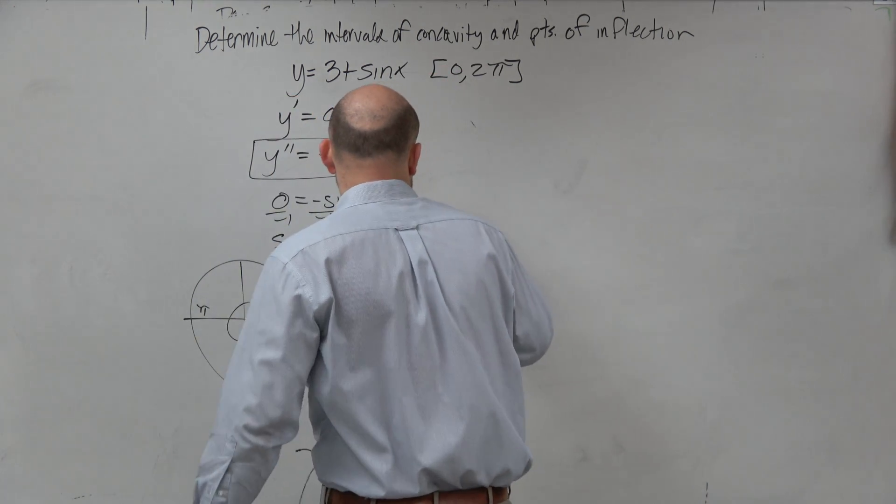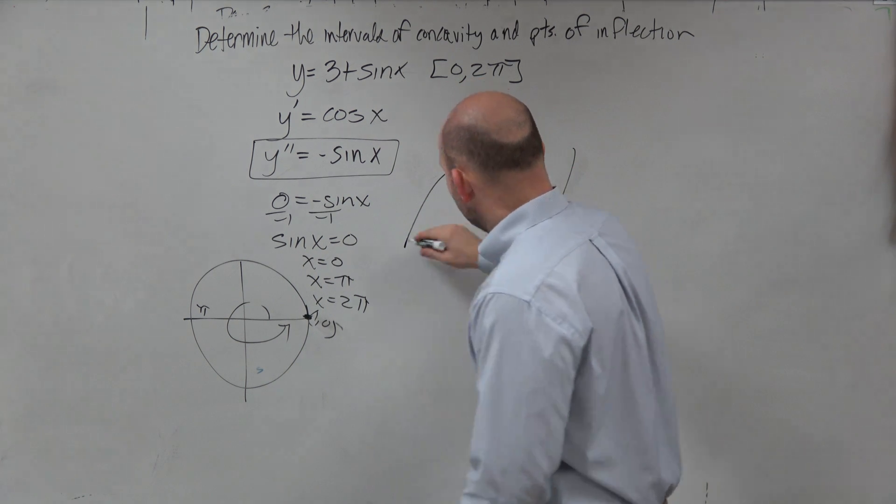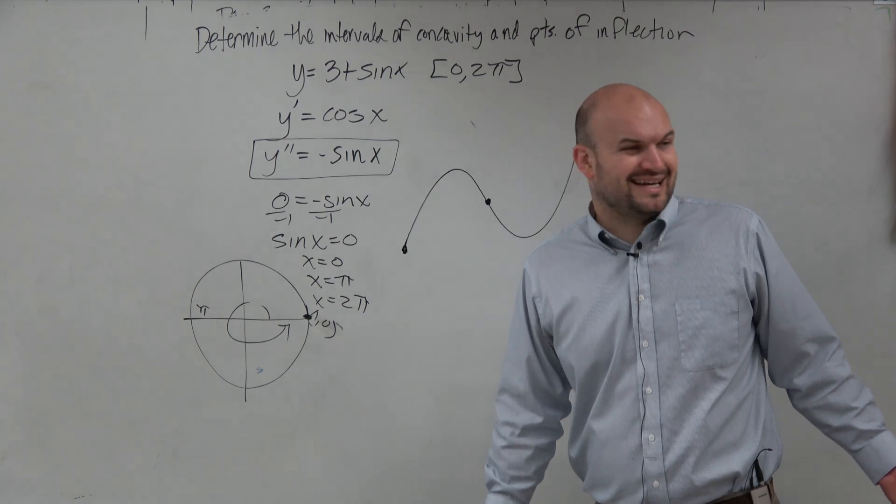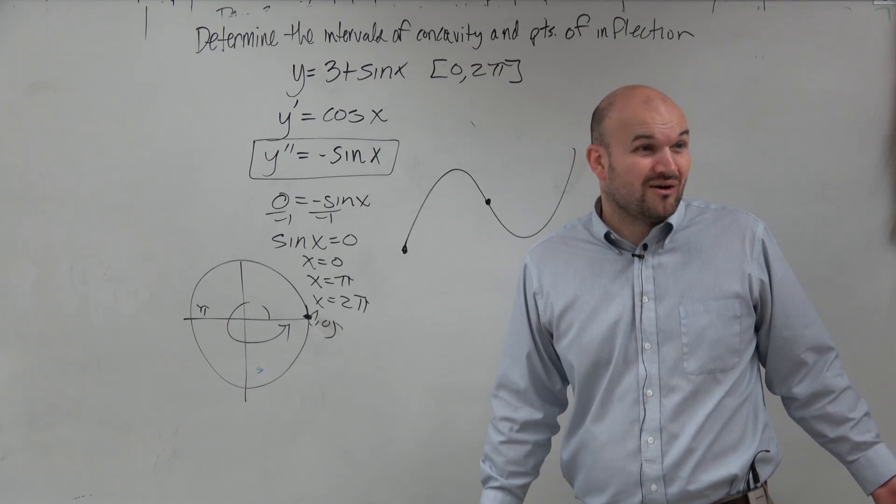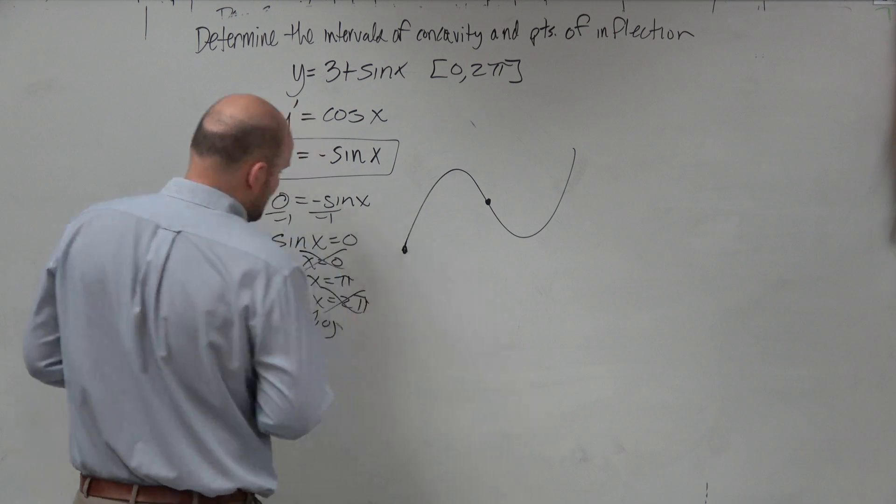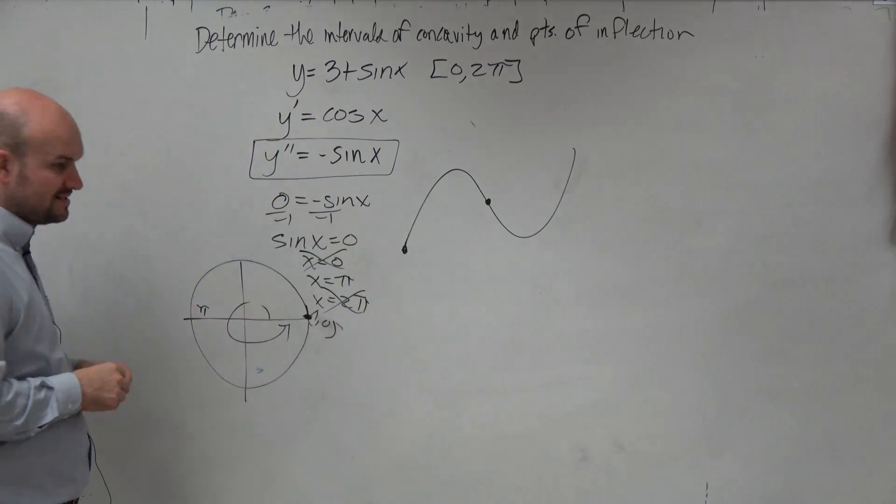However, look at our graph. Can we have a point of inflection at an endpoint? Can we have a change in concavity at an endpoint? No. So we don't need to include 0 or 2 pi.